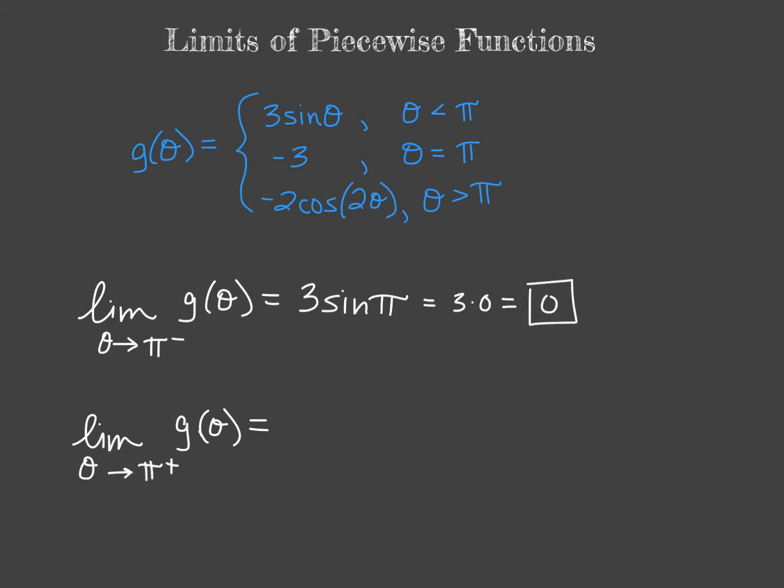We want to take a look at the limit as theta approaches pi from the right now. Approaching a value from the right means that you are greater than that value. So we need to look at the part of our piecewise function where theta is greater than our value of pi, which is down here.